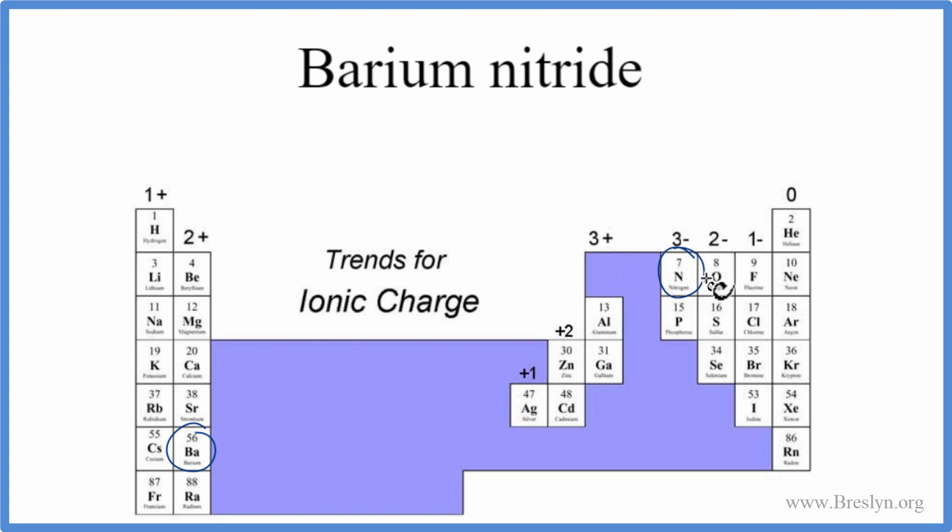Metal and a non-metal gives us an ionic compound. We do need to worry about charge when we write the formula for barium nitride. So let's write the element symbol for each of these atoms here. We have Ba, that's barium, and nitride, that's nitrogen atom here, that's N.